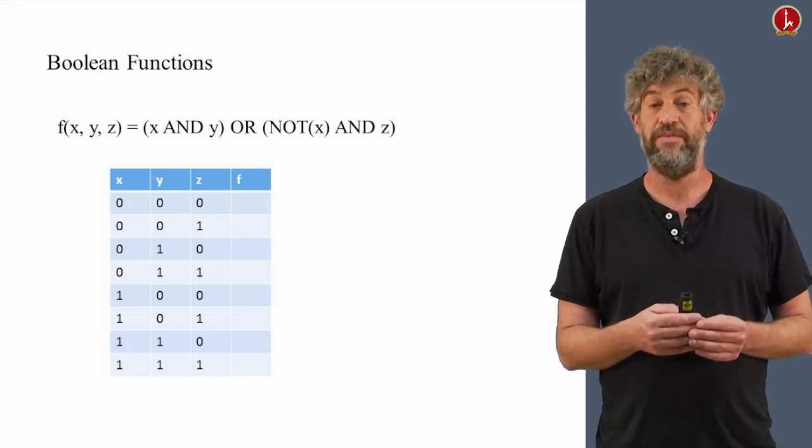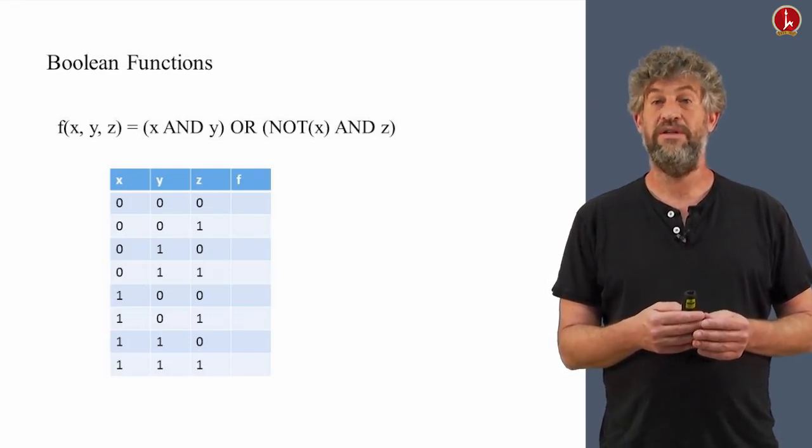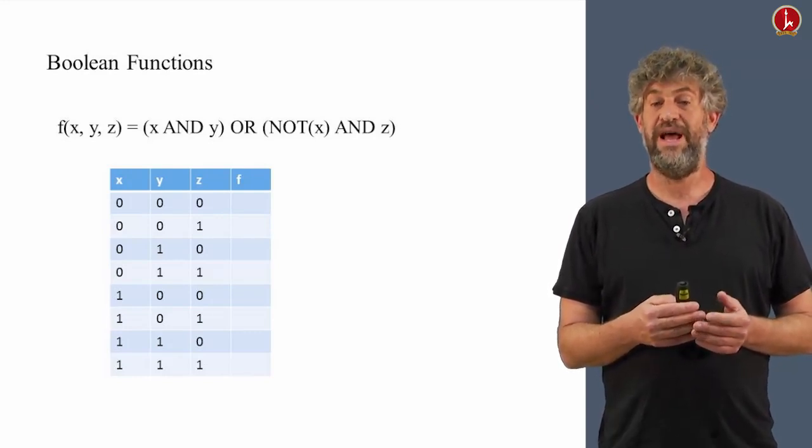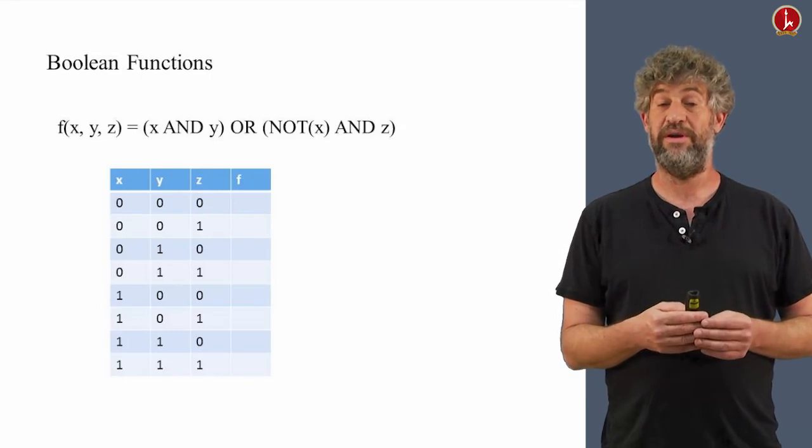But here we can actually write down all the possible values that x, y, z can have as a triplet. We can have x=0, y=0, and z=0 that corresponds to the first row in the table, and so on, until the last row of the table that corresponds to all three of them being one.